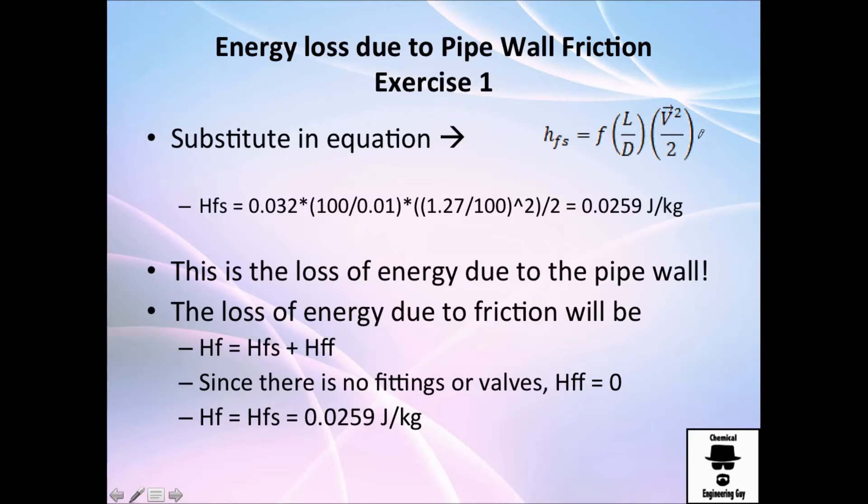So this is the loss. We are losing 0.0259 joules for each kilogram going in this pipe. So the total friction will be essentially the friction due to fittings, which we don't have. It's only a pipe. So we can say that the total friction loss is equal to the friction loss of the pipe. This value right here. And we're done with exercise number one.